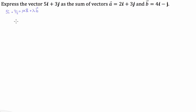To start with, we're going to describe vector a and vector b in their component forms in this equation. So we're going to say 5i plus 3j is going to be equal to mu times 2i plus 3j plus lambda times 4i minus j.